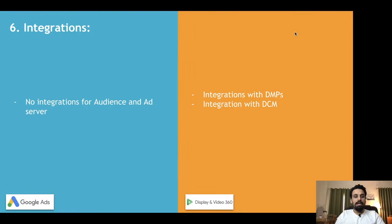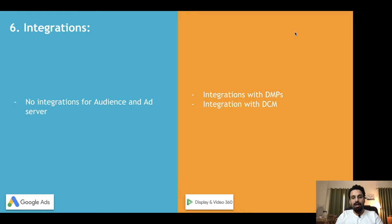The sixth difference is integrations. Google Ads does not support integrations for audience targeting or ad servers. DV360, however, can be integrated with DMPs — Data Management Platforms. Companies like Oracle partner with businesses such as Booking.com, Mastercard, and Netflix to collect user behavior data, compile it, and make it available through DMPs. If you are an agency or have access to a DMP, you can integrate it directly with DV360.